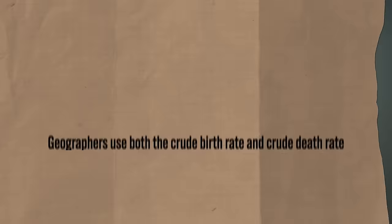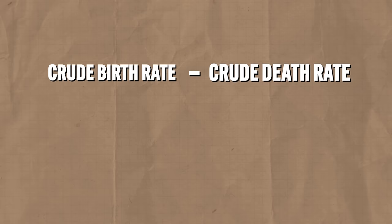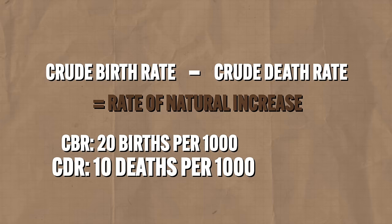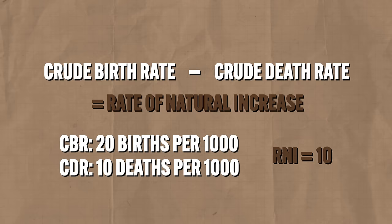Geographers use both the crude birth rate and crude death rate together when studying changes in populations. Take the CBR and subtract the CDR, and that gives you the rate of natural increase (RNI) for a population. For example, if a population has a crude birth rate of 20 per thousand and a crude death rate of 10 per thousand, the RNI is 10 — a positive number, so the population is growing. If the RNI is negative, the population is declining.